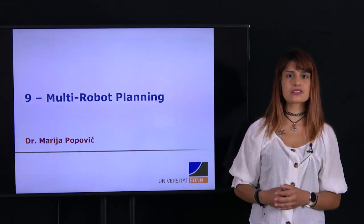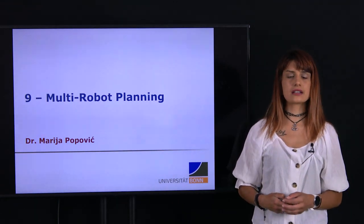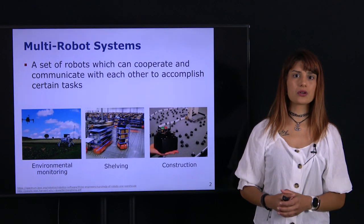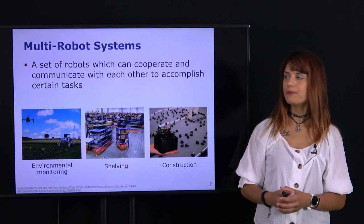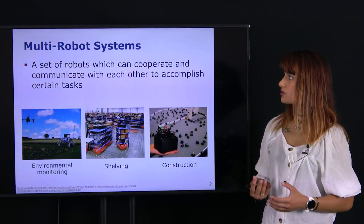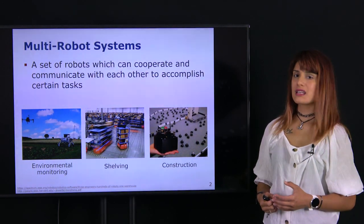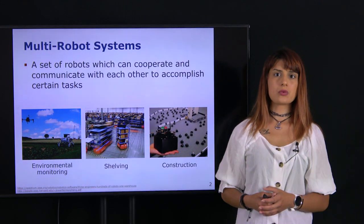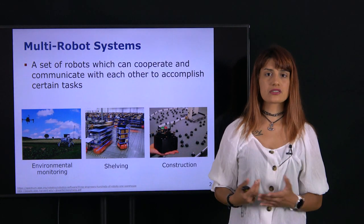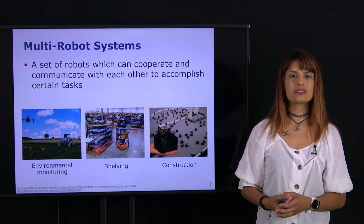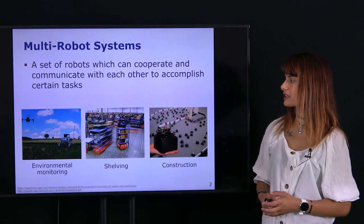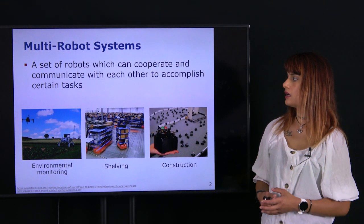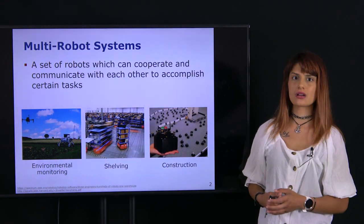Let's start by defining what is a multi-robot system or a multi-robot team. A multi-robot system is a set of robots that are communicating and collaborating, working together in order to perform a particular task in a shared environment.